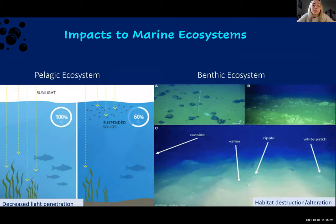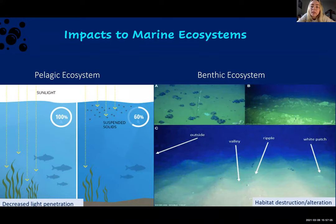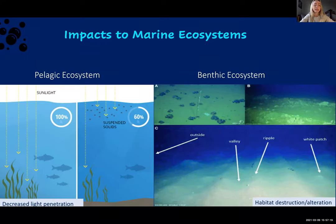These two different types of plumes can affect different aspects of the marine ecosystem. Near-surface plumes affect the pelagic community by increasing the turbidity of the water column. Increased turbidity can alter biological productivity by allowing bottom nutrient-rich sediments to rise to the surface, which can create artificial upwellings. Also, increased sedimentation can decrease light penetration and reduce rates of photosynthesis, as shown in the image on the left-hand side of your screen.